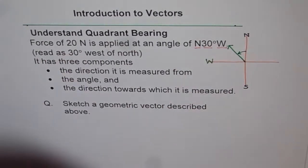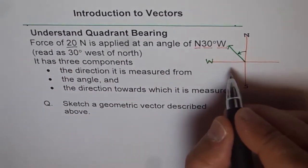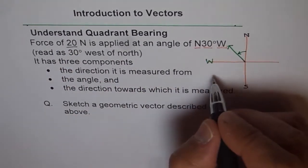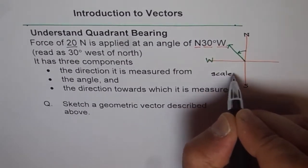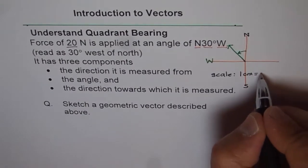So we have 20 newtons. So how do you represent 20 newtons here? So for that, we have a scale. So let me write down here my scale. Say scale is 1 centimeter equals to 10 newtons.